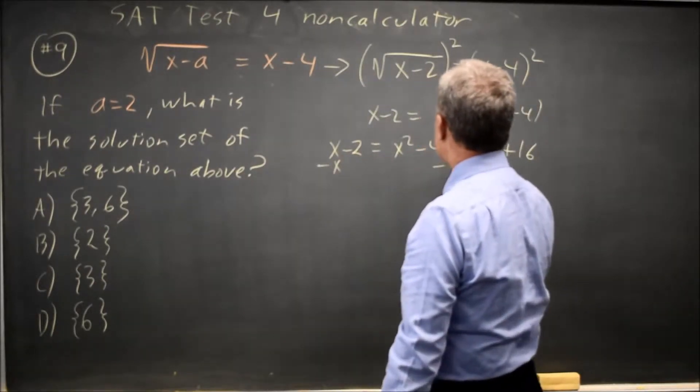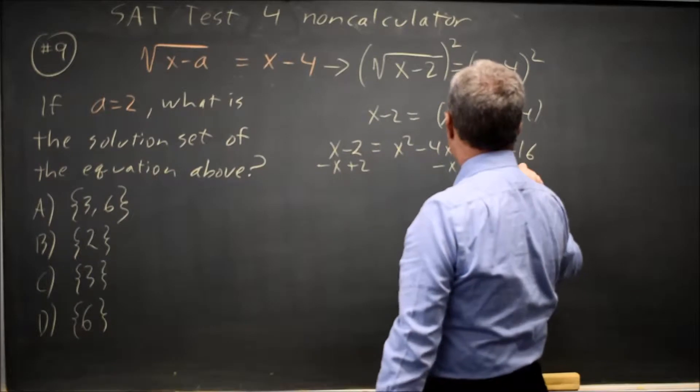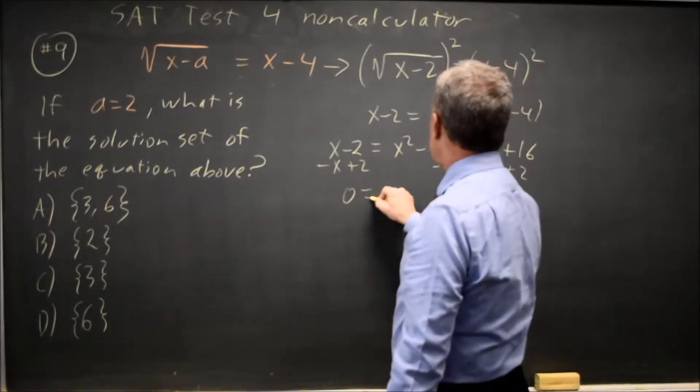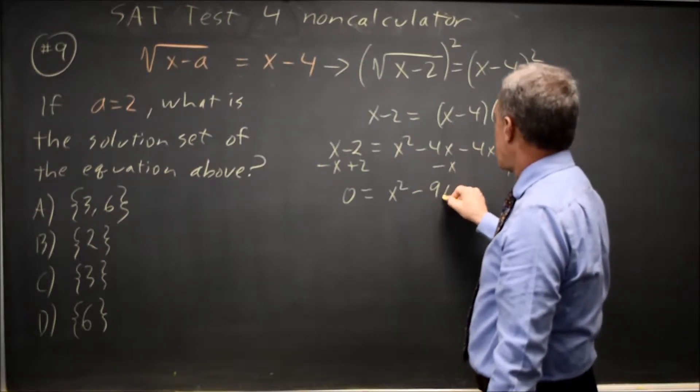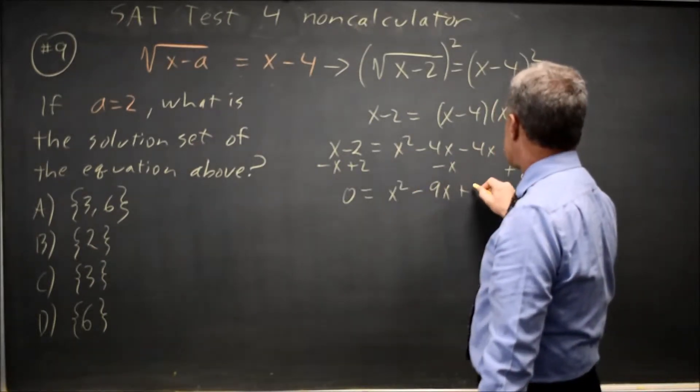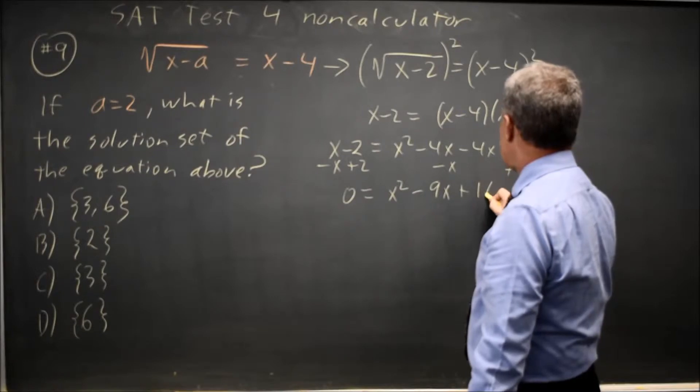Subtract x from both sides, add 2 to both sides, and I get 0 equals x squared minus 4x minus 4x minus x is minus 9x, and then plus 18.